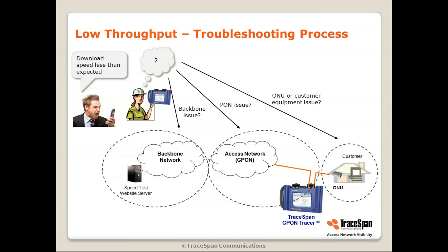The example we're showing here is using our test tool, the G-PON Tracer, also shown here. This tool will give you different indications in each case, depending on which network element the problem comes from.